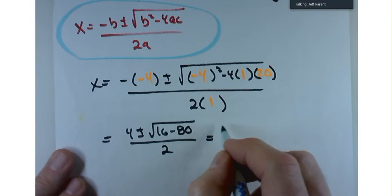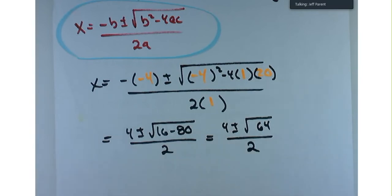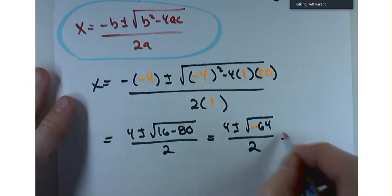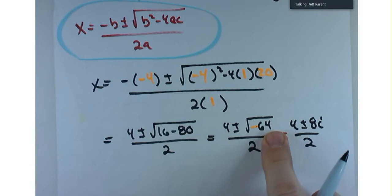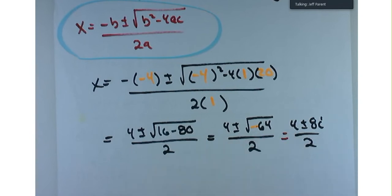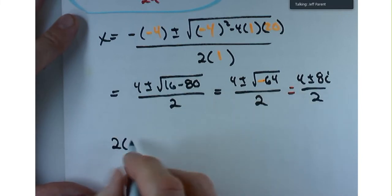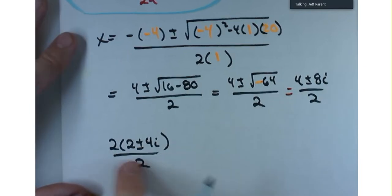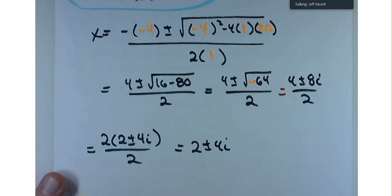Something interesting happens: the square root of 16 minus 80 is the square root of negative 64. The negative under the radical is why we couldn't factor it — it doesn't have any real roots. We get 4 plus or minus 8i over 2. Factoring 2 from the numerator gives 2 times the quantity 2 plus or minus 4i, over 2. The 2's cancel, leaving 2 plus or minus 4i as our roots.